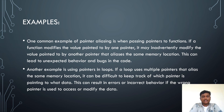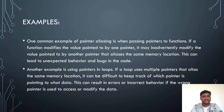Another example is using pointers in loops. If a loop uses multiple pointers that alias the same memory location, it can be difficult to keep track of which pointer is being modified and what data it points to. This can result in errors or incorrect behavior if the wrong pointer is used to access or modify the data.